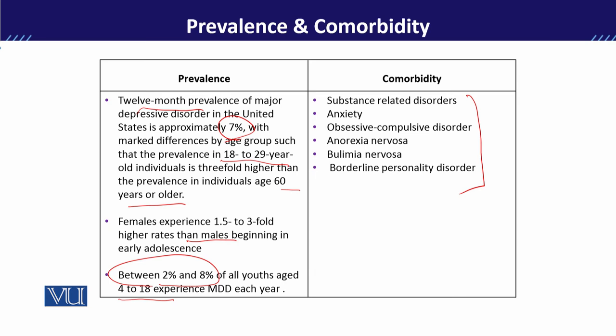Anorexia nervosa and bulimia nervosa are eating disorders that can be comorbid with major depressive disorder. Anorexia nervosa involves significant weight loss, while bulimia nervosa involves binge eating.